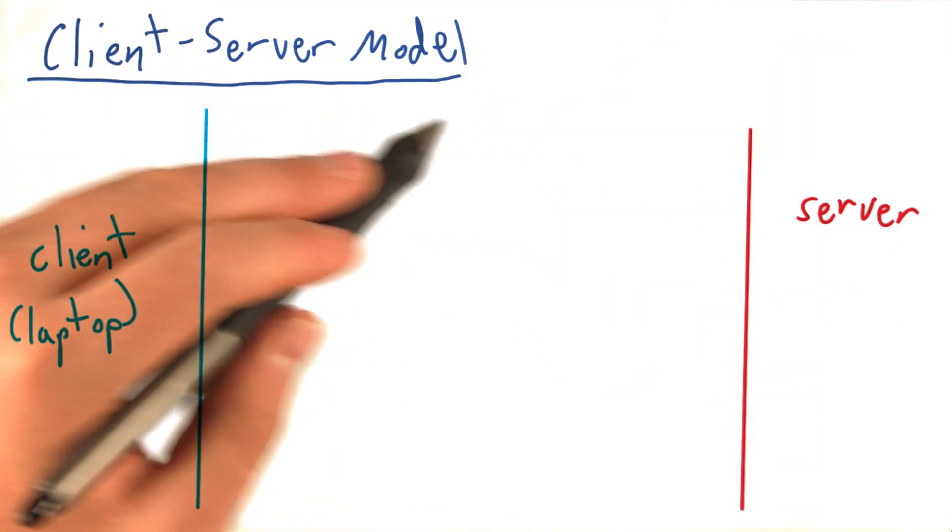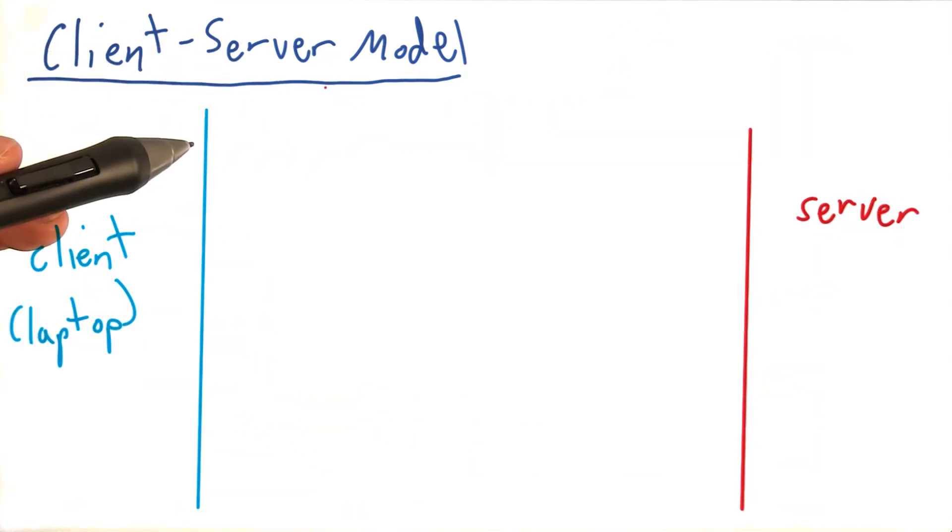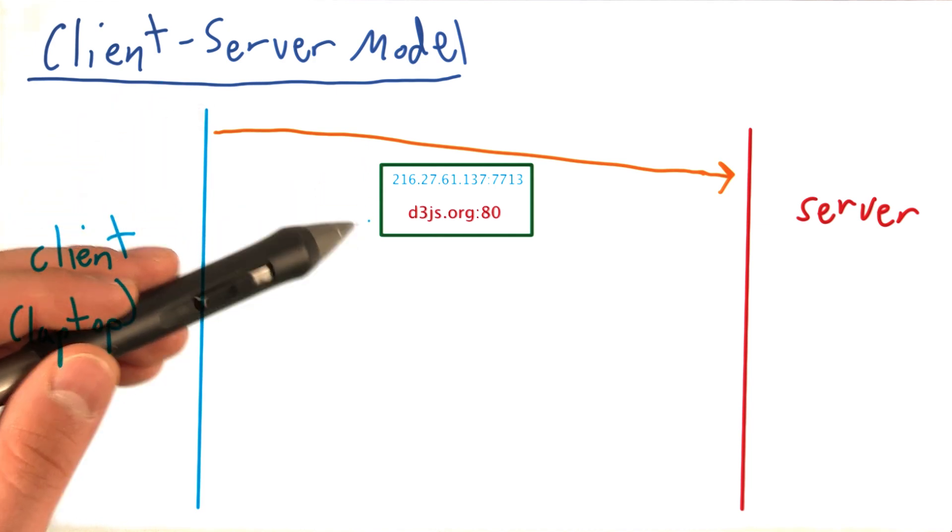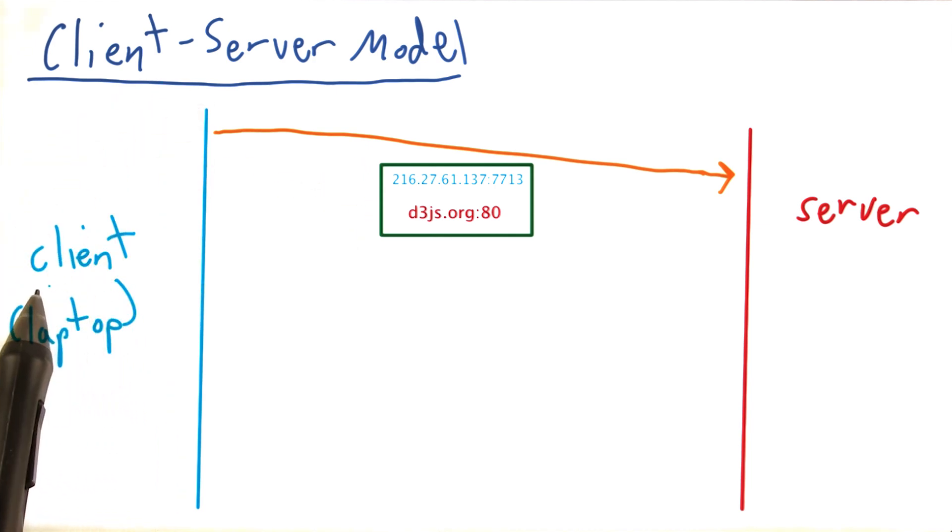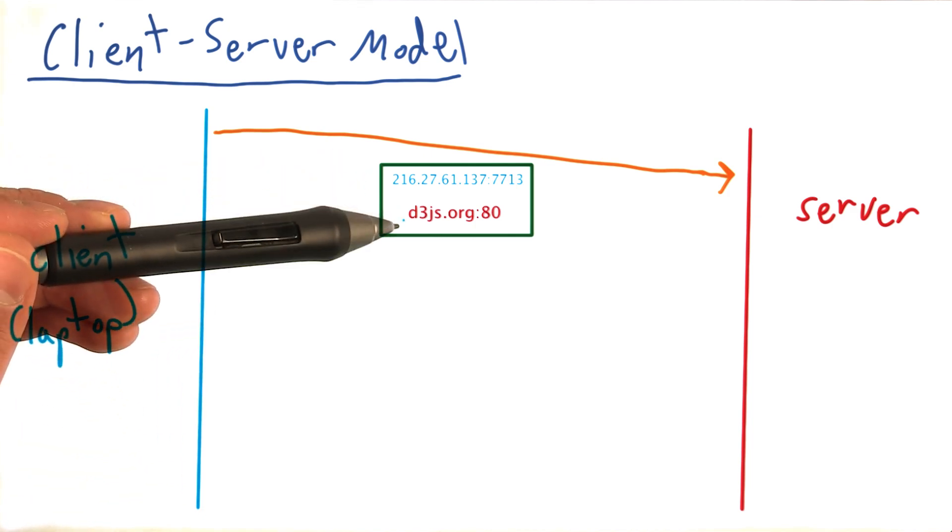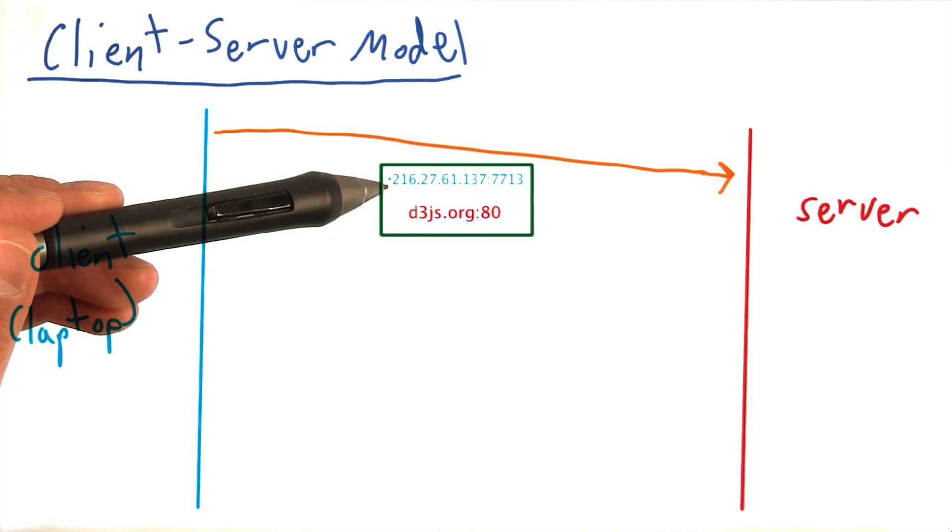I wanted to simplify the diagram a little bit to show this process and exchange much more clearly. Again, continuing the analogy of requesting your favorite book from a friend. Assuming that the internet and telephones don't exist, you would have to send a letter. Let's assume that you are the client, or in this case, a laptop.